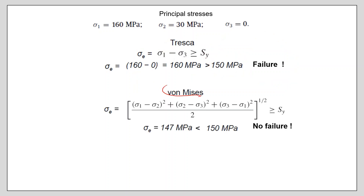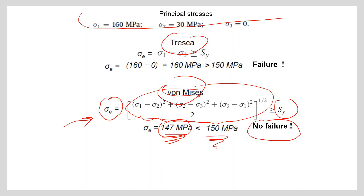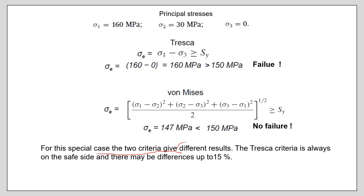For von Mises, the equivalent stress is calculated using the von Mises equation and compared with the yield strength of the material. This expression gives 147 MPa. Since 147 is smaller than 150, von Mises says no failure. This is a nice example where Tresca and von Mises give different results. Tresca is always on the safe side, and the difference between the two criteria can be up to 15 percent.